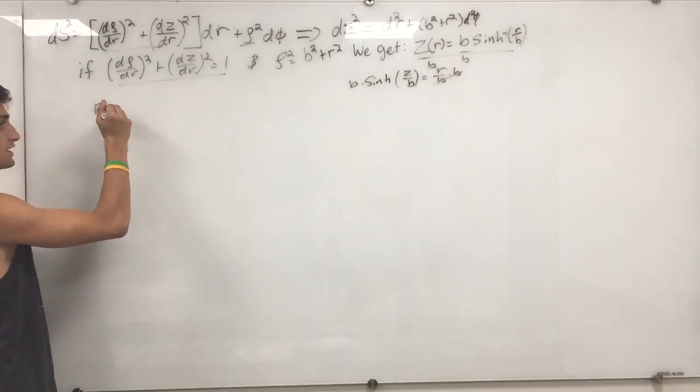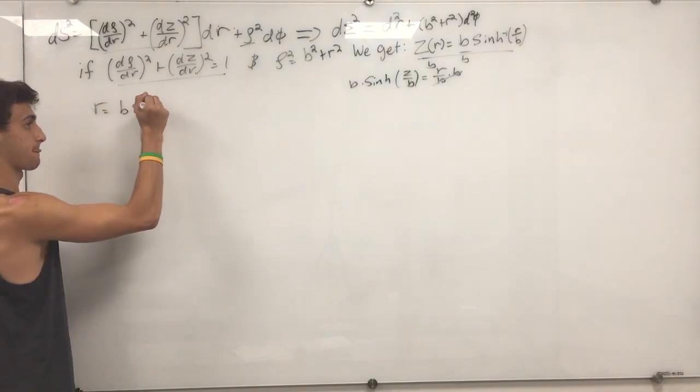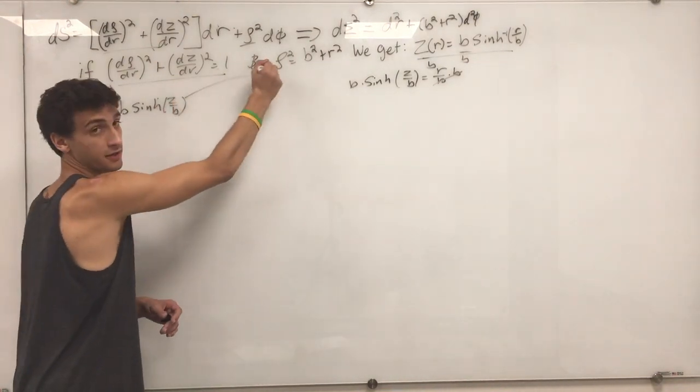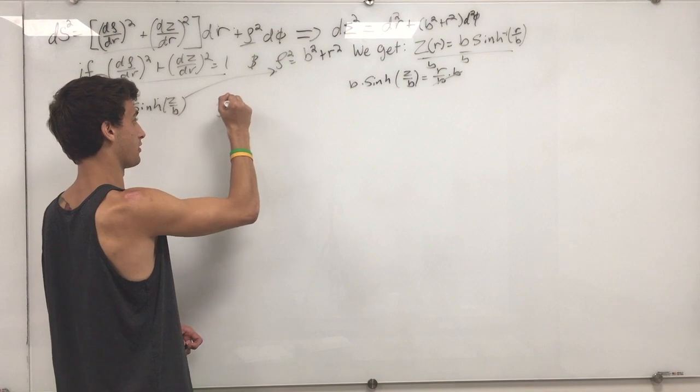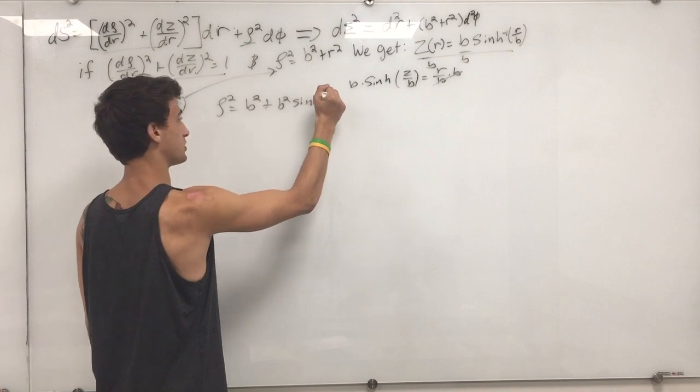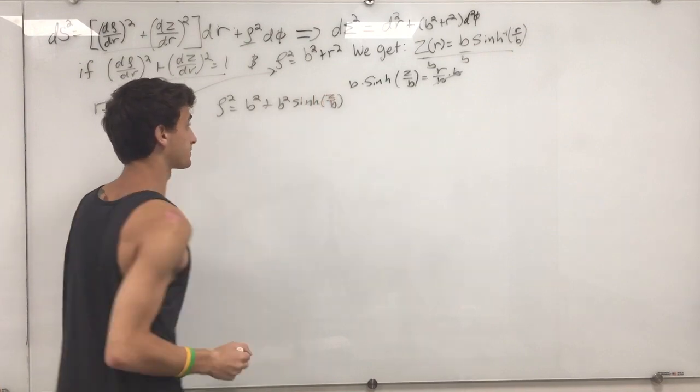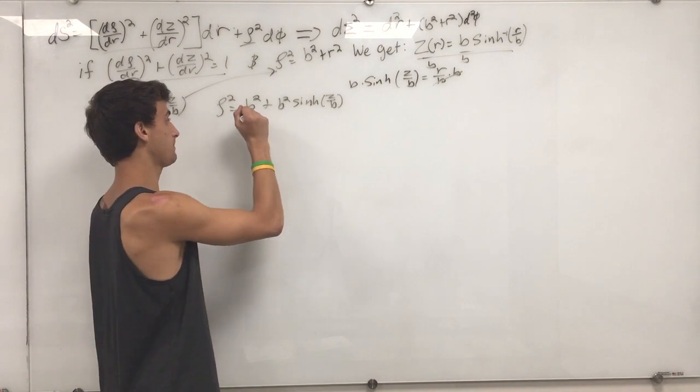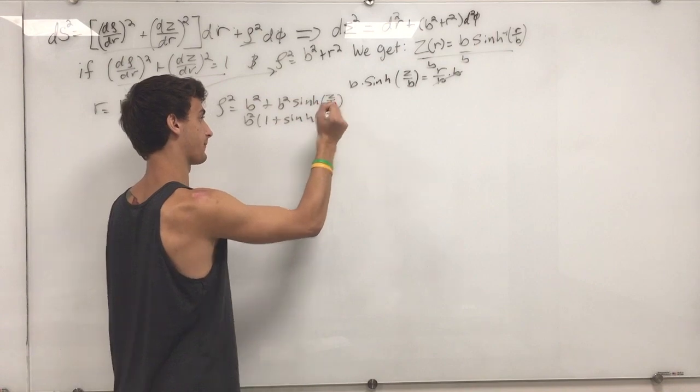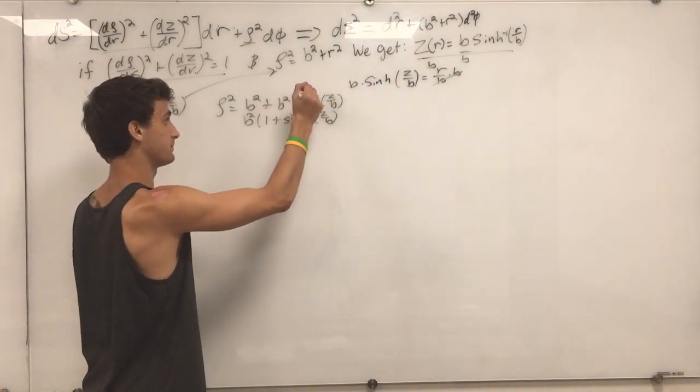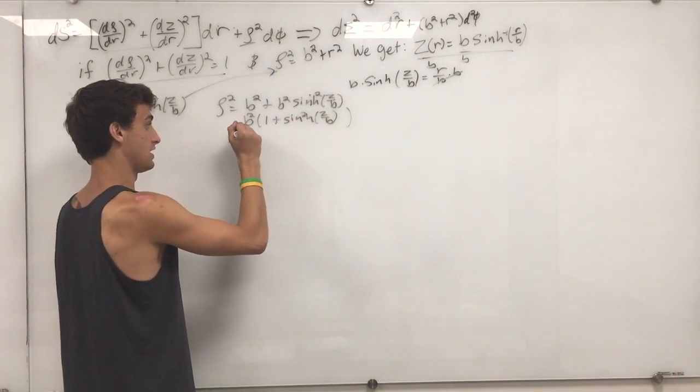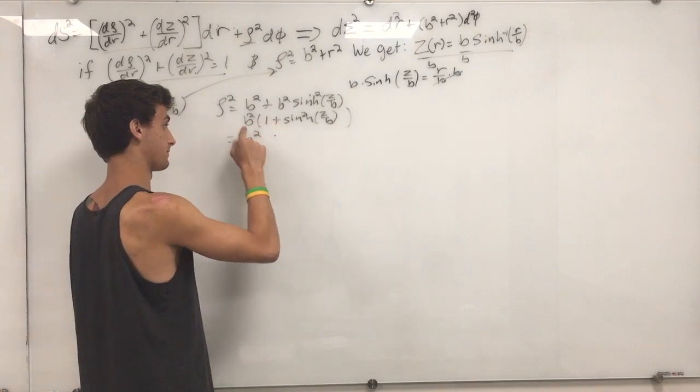So, we just get sinh z over b equals r over b times both sides by b to get rid of that. Now, we just have an expression for r. So, now we can plug it back in here. And solving for rho, we get b squared plus b squared sinh z over b. Pull out the b squared. We get one plus sinh z over b squared. And all that is hyperbolic cosine squared.